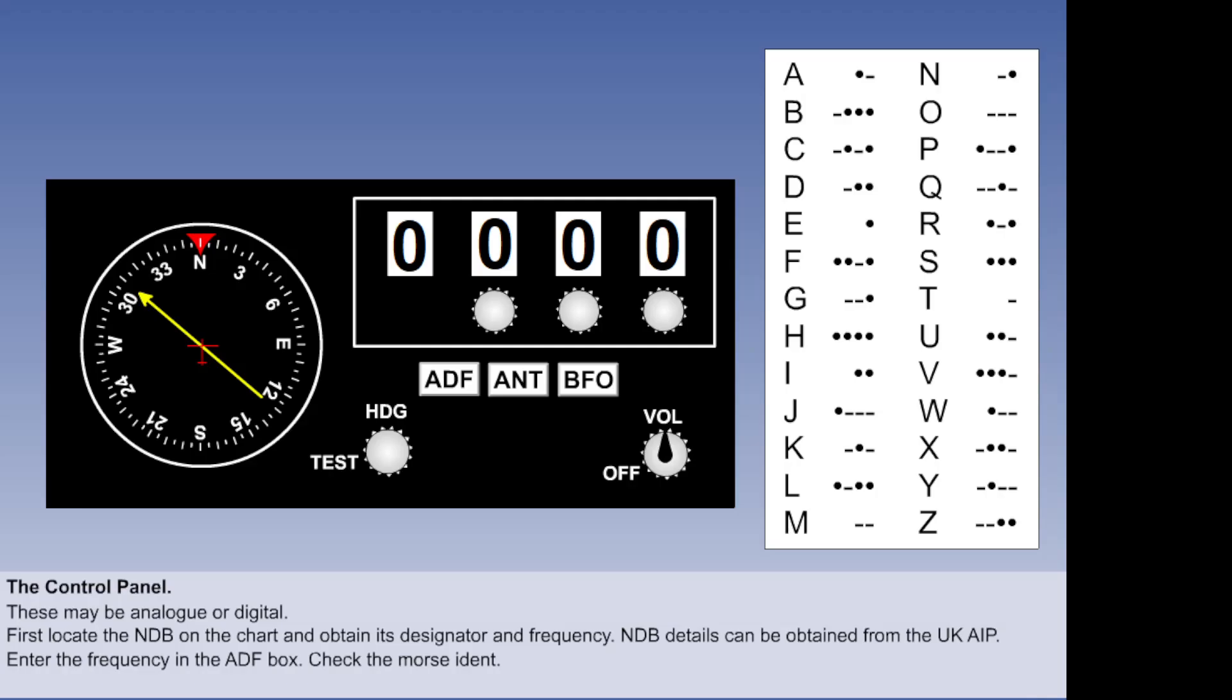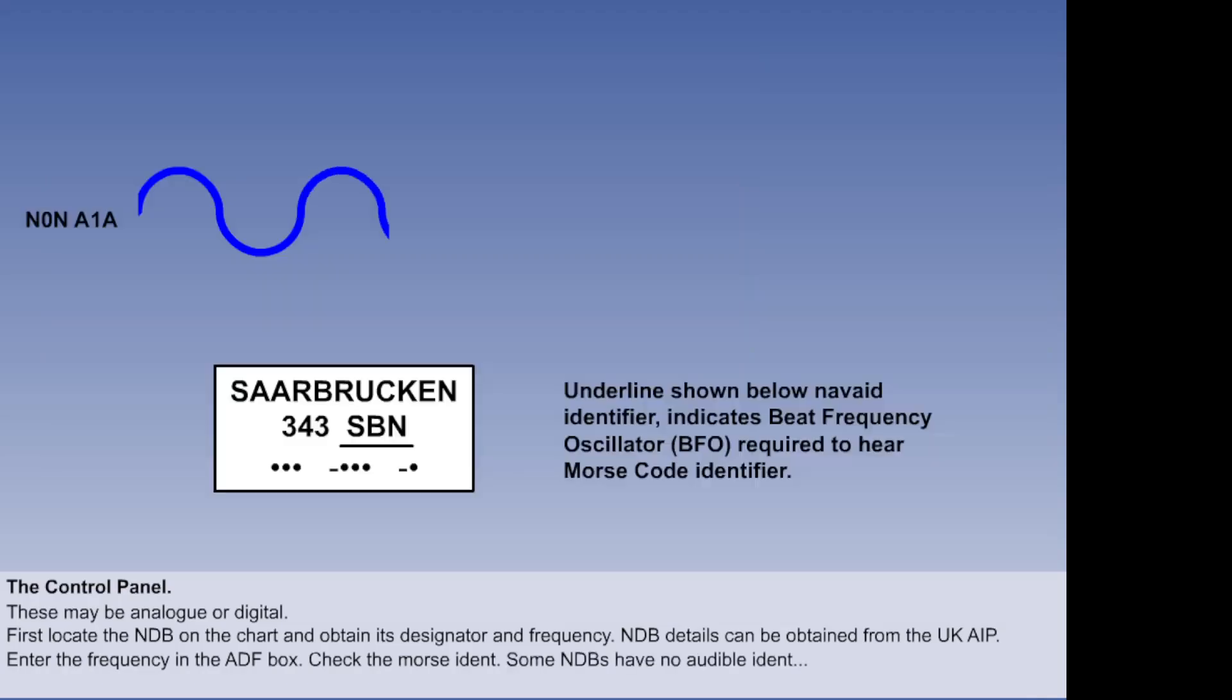Pressing the antenna button deactivates the loop antenna, and the audibility of the A2A identifier should improve, but the bearing information must obviously be disregarded. In some NDBs, the amplitude of the carrier wave remains constant, and therefore it is impossible to achieve an audible output from the receiver.